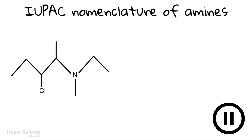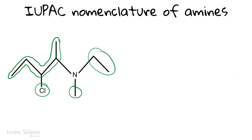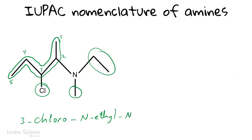Try to pause the video and name this structure. The longest chain is identified, and we have three substituents: ethyl, methyl, and chloro. Numbering the carbons — one, two, three, four, and five — and naming substituents in alphabetical order: 3-chloro, then N-ethyl, then methyl. The longest chain is a pentanamine, so the full name is 3-chloro-N-ethyl-2-pentanamine.